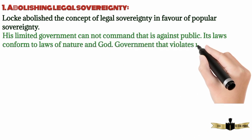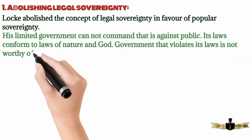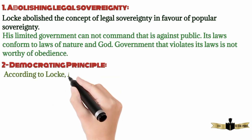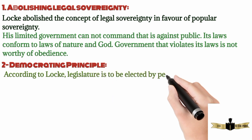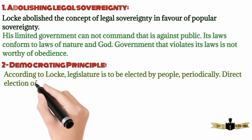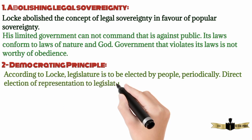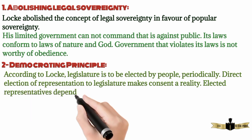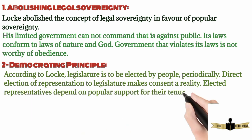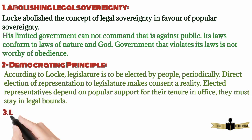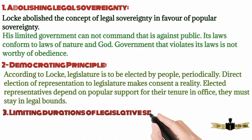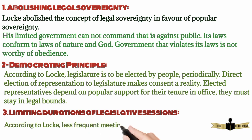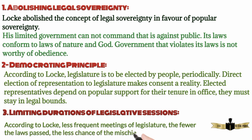A government that violates its laws is not worthy of obedience. 2. Democratic principle. According to Locke, the legislature is to be elected by the people, periodically. Direct election of representatives to the legislature makes consent a reality. Elected representatives depend on popular support for their tenure in office and must stay within legal bounds. Limiting the duration of legislative sessions: according to Locke, less frequent meetings of the legislature mean fewer laws passed and less chance of mischief being done.